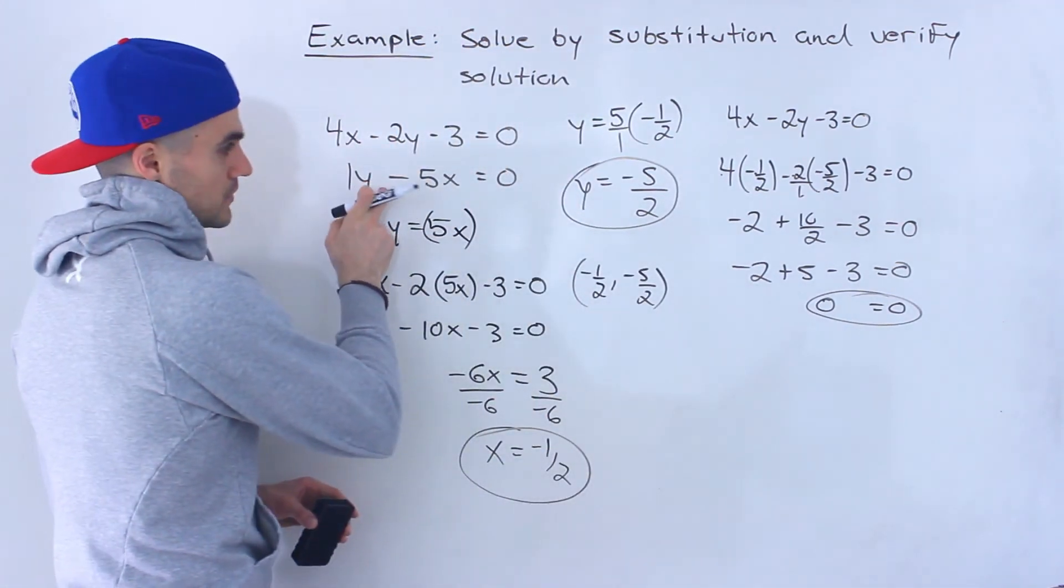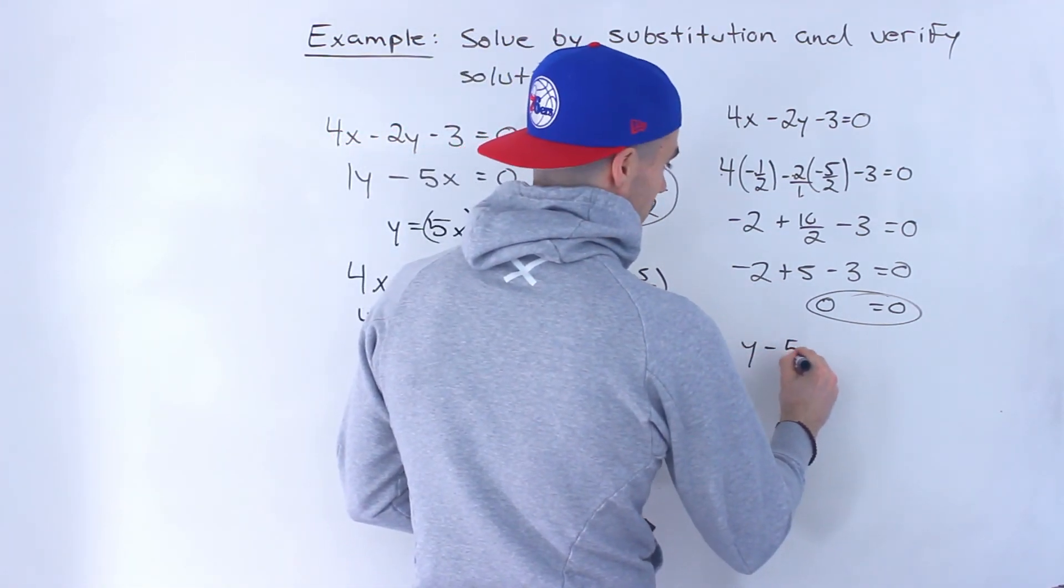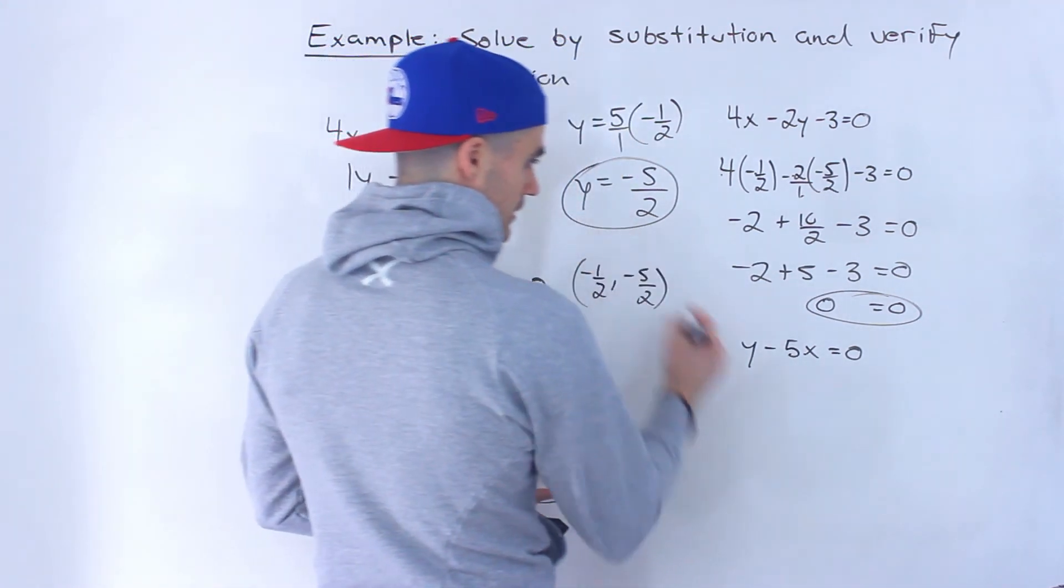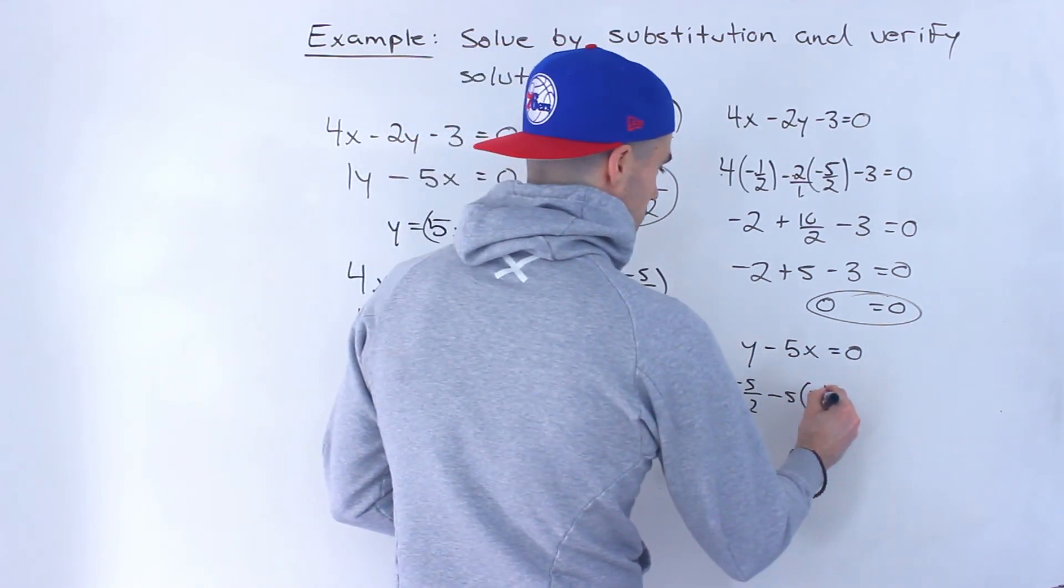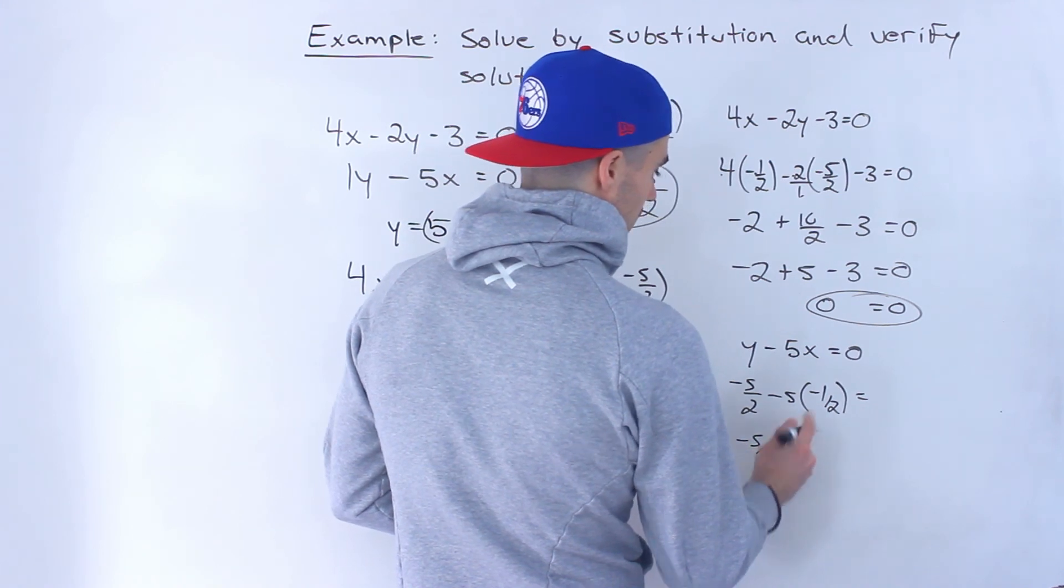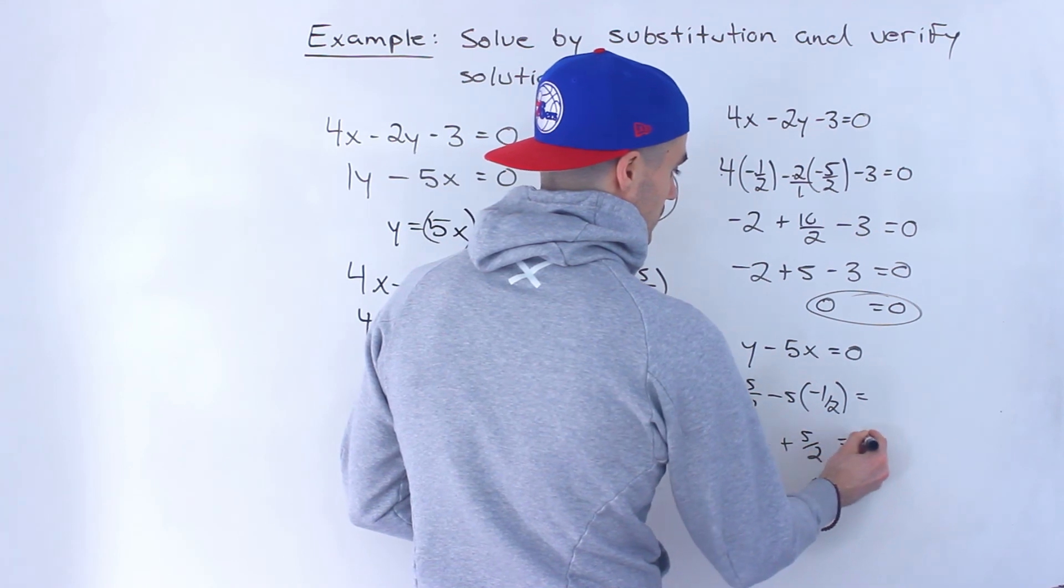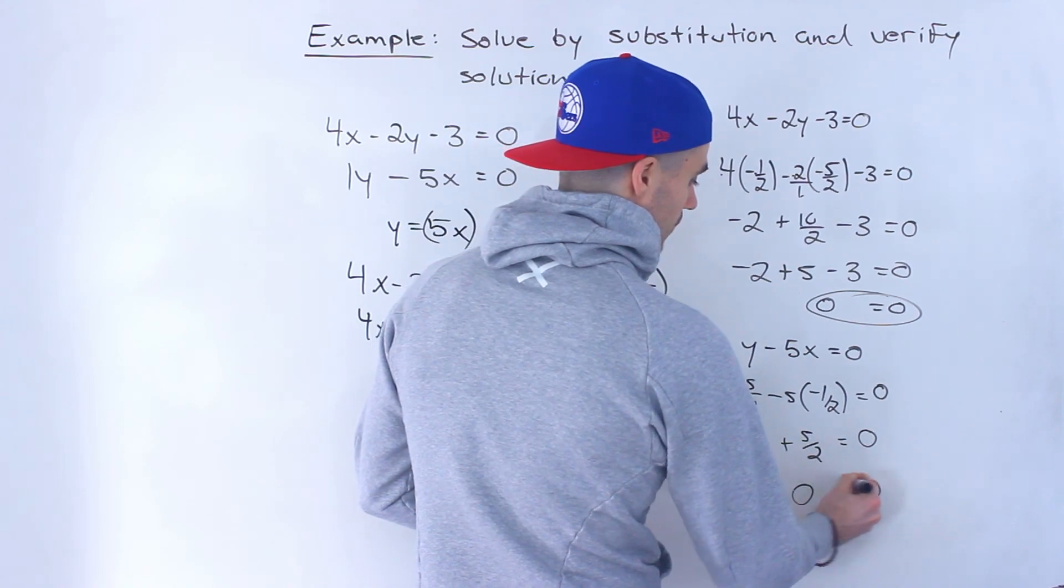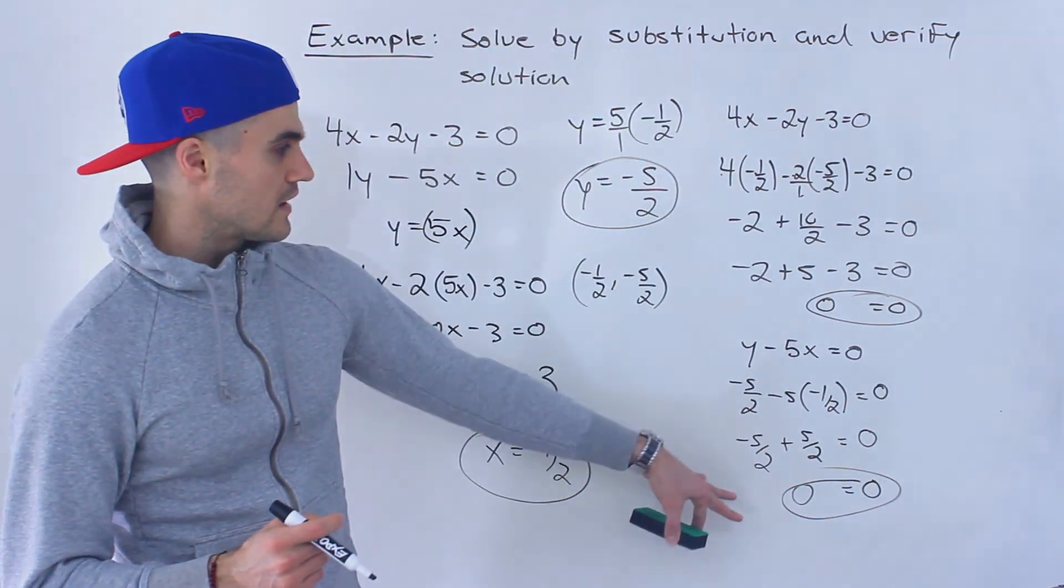Then we want to do that same check with the second line. So we'll have y minus 5x equals 0. Plug in y: negative 5 over 2 minus 5 times the x value negative 1 over 2. We'll have negative 5 over 2, and negative 5 times negative 1 over 2 gives us positive 5 over 2. These two net out to 0, so left side equals right side there as well. We verified our solution.